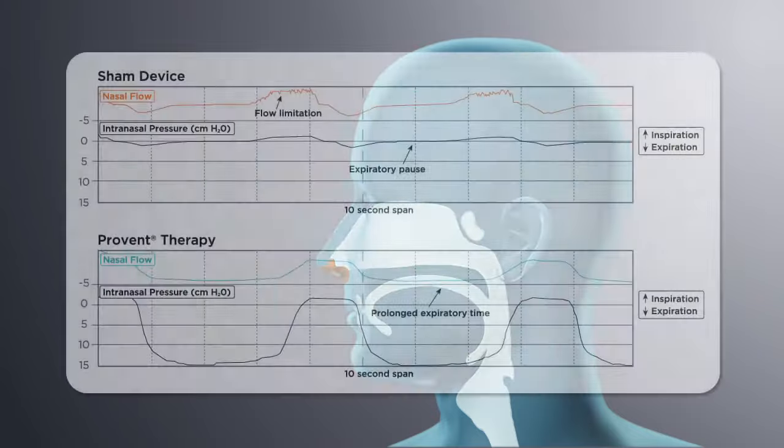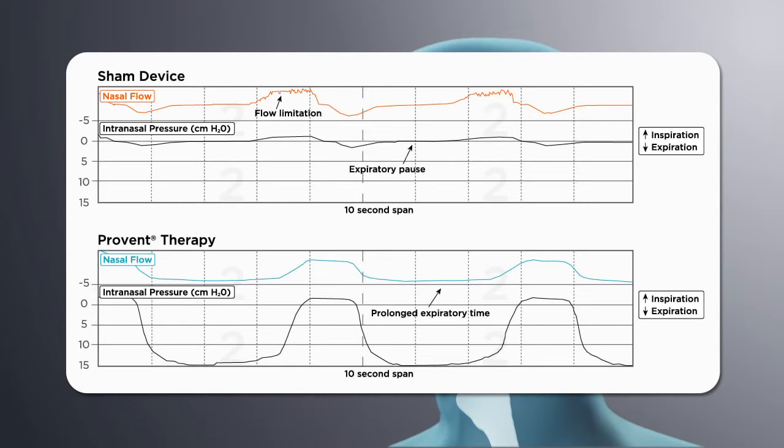These PSG images show a patient with and without ProVent therapy. The top panel shows an untreated patient. There is clear inspiratory flow limitation. Intranasal pressure is zero after expiration and there is a long end-expiratory pause.